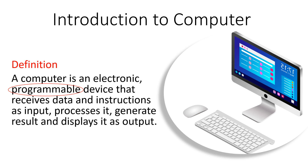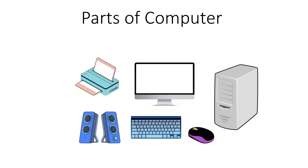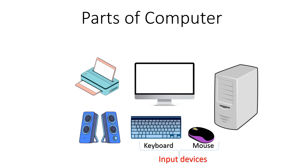Now let's talk about the parts of computer. In a complete computer system there is a keyboard and mouse for giving data and instructions. Keyboard is the primary input device that helps to enter data, whereas mouse helps to give instructions — that is why keyboard and mouse are considered input devices. Then we have the CPU, also known as the processing device, that processes the data and instructions received from the input devices.